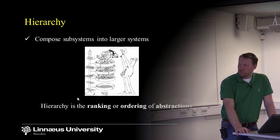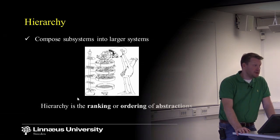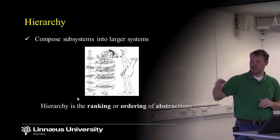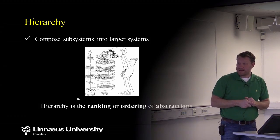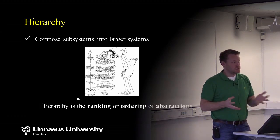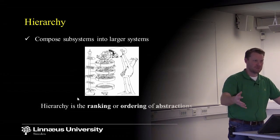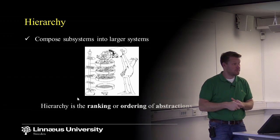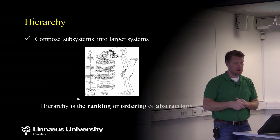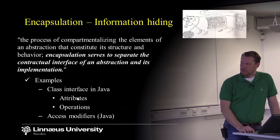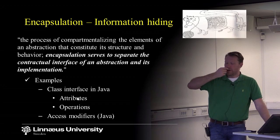Hierarchy — we can compose subsystems into larger subsystems, or we can decompose systems into subsystems, creating a hierarchy. What you have here is a ranking or ordering of abstractions — a system consists of subsystems that consist of subsystems. That's an example of a hierarchy.